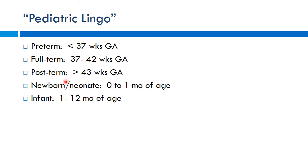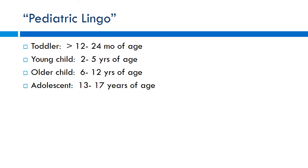Newborns or neonates refer to the first 28 days of life — this is important especially when triaging a patient with fever of unknown origin, as the likely organisms differ before and after that window. Infant refers to the first year of life. Neonate and infant can sometimes be used interchangeably, but neonate specifically means the first 28 days. Toddler is one to two years, young children two to five, older child six to twelve.